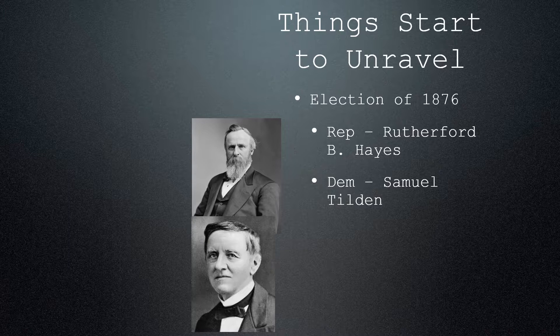Votes are cast. Samuel Tilden has 184 out of the 185 needed electoral college votes to win. So the thought is that when the final votes are counted, he is going to win. But there's a problem. Four states had not sent their votes in, and 20 other votes were still out because the returns were irregular — there were issues with the voting.